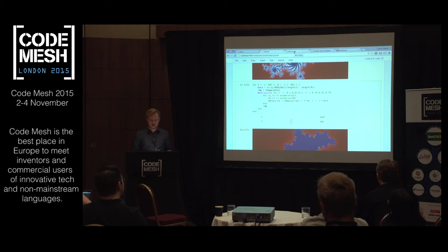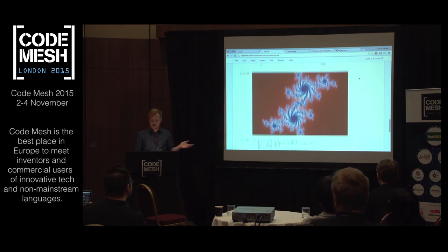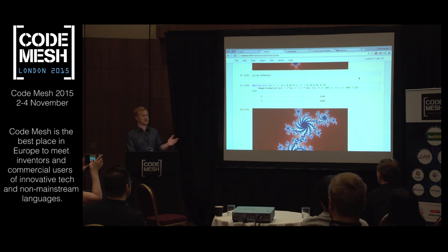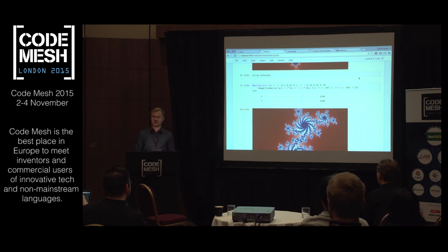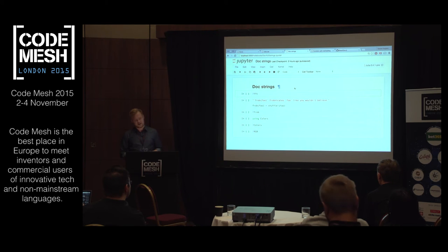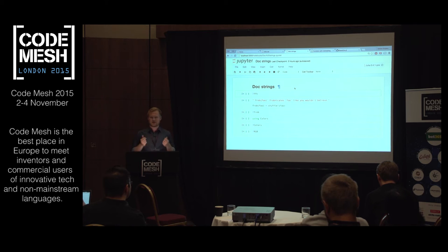Now I'm going to talk about some of the features we've added. A lot of the stuff I'm demoing here, like the manipulate stuff, are libraries developed relatively recently — manipulate has been around at least six months, a product of a Google Summer of Code project last summer that was very successful. So, probably the least exciting new feature, but one that makes a huge difference for people's experience: doc strings.